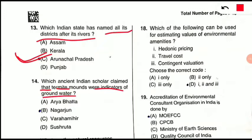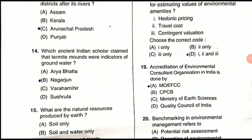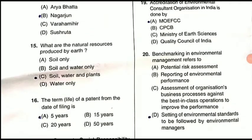Question 14: Which ancient Indian scholar claimed that termite mounds were indicators of groundwater? This was a very important finding. It was given by Varahamihira. He provided many indicators of groundwater, saying that where there are termite mounds, groundwater can be found — because termite mounds grow in groundwater regions.